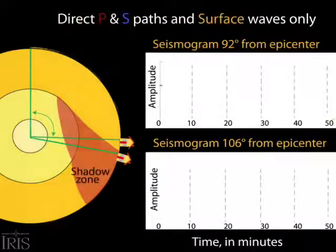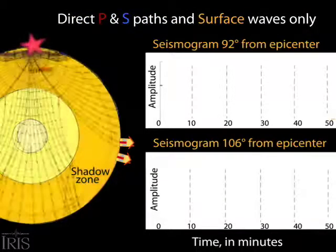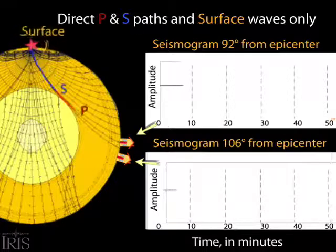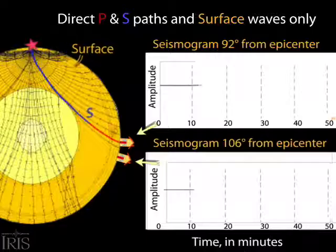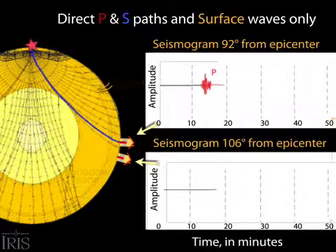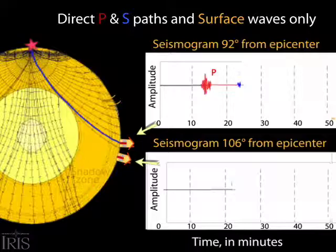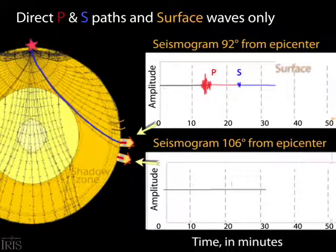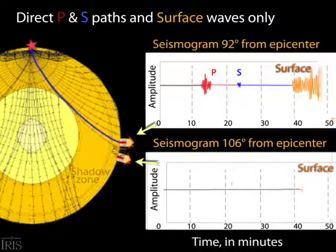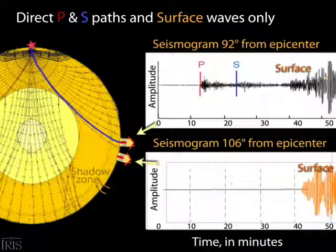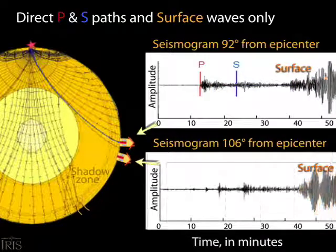An earthquake sends P and S body waves through the earth. The direct P and S waves arrive at the station outside the shadow zone; only highly sensitive seismometers can detect these. The houses merely depict direction of motion. In the shadow zone there are no direct P or S arrivals, but the slower surface waves show up at all stations. An actual seismogram at 92 degrees shows the arrival of the direct P and S waves as well as the surface waves.